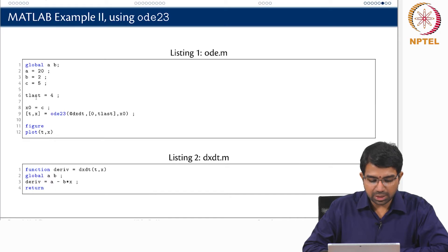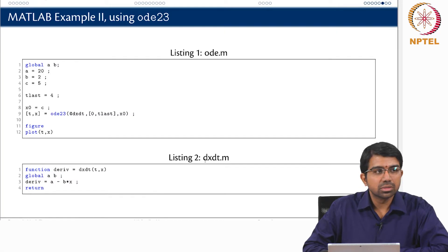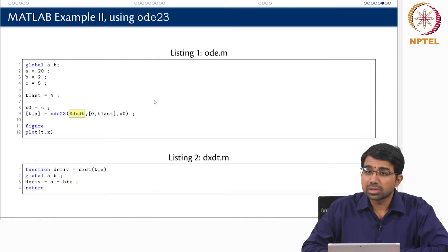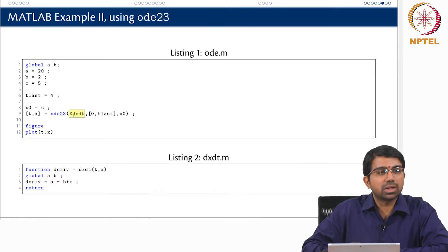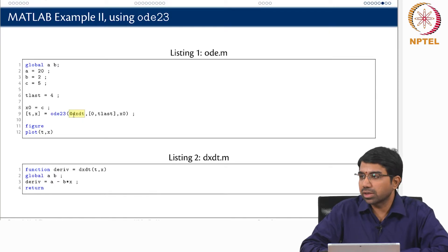I still have to give t_last, which is 4 here, and I still have to give a function — this is your f(x). The at-symbol is a pointer to a function; this is how you give a function as input in MATLAB. The ODE23s or ODE23 function itself requires a function as input — your f(x) basically.